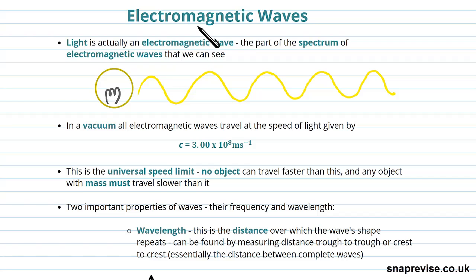So let's start by talking about electromagnetic waves. Light is actually an electromagnetic wave. Light is actually the part in the spectrum of electromagnetic waves - I'm going to talk about the spectrum later - that we can see, visible light.